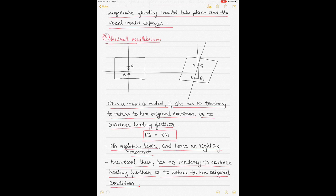In neutral equilibrium, the vessel is in a precarious situation — any weight shifting, loading, or discharging can put the vessel in a capsizing position. All efforts should be made to bring down the center of gravity. Load cargo in such a way that the center of gravity shifts downward — towards the lower deck or towards the listing side — to lower G so that KG becomes less than KM, forming a righting lever to bring the vessel back upright.